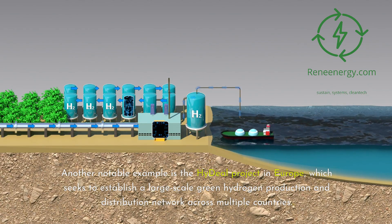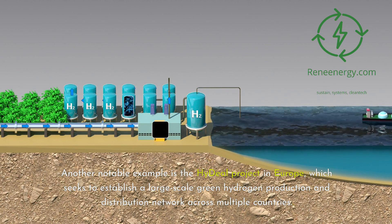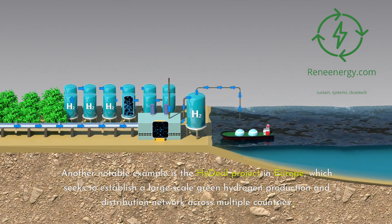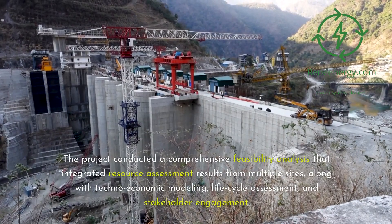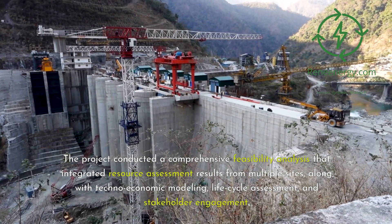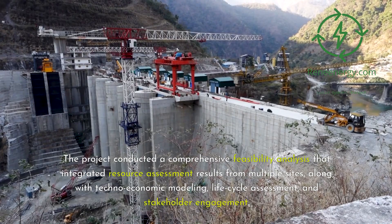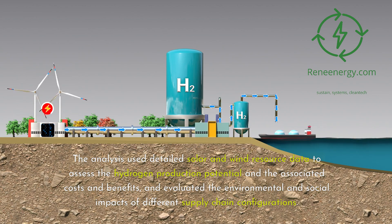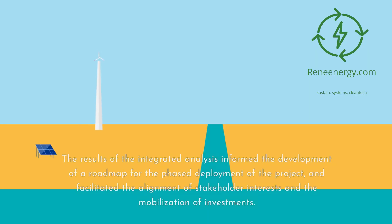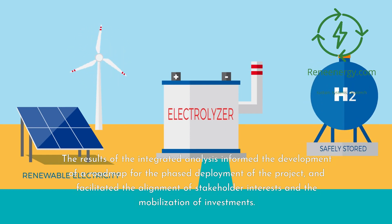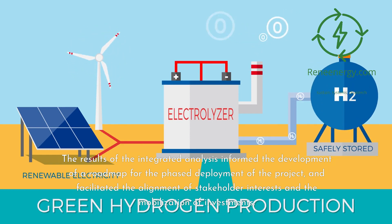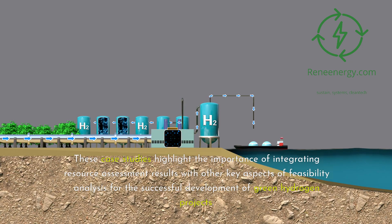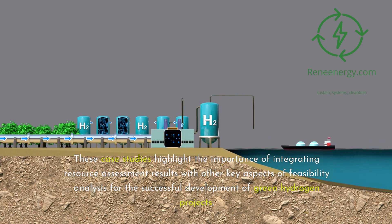Another notable example is the HyDeal project in Europe, which seeks to establish a large-scale green hydrogen production and distribution network across multiple countries. The project conducted a comprehensive feasibility analysis that integrated resource assessment results from multiple sites, along with techno-economic modeling, life cycle assessment, and stakeholder engagement. The analysis used detailed solar and wind resource data to assess the hydrogen production potential and the associated costs and benefits, and evaluated the environmental and social impacts of different supply chain configurations. The results informed the development of a roadmap for the phased deployment of the project and facilitated the alignment of stakeholder interests and the mobilization of investments.